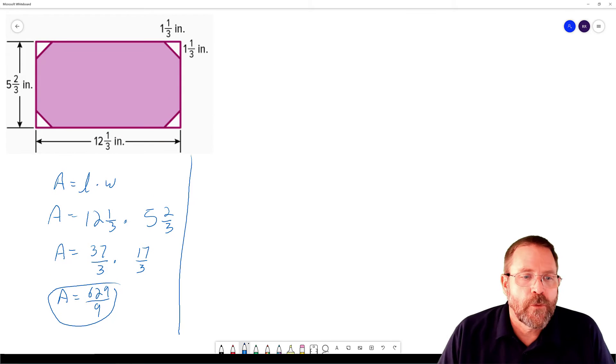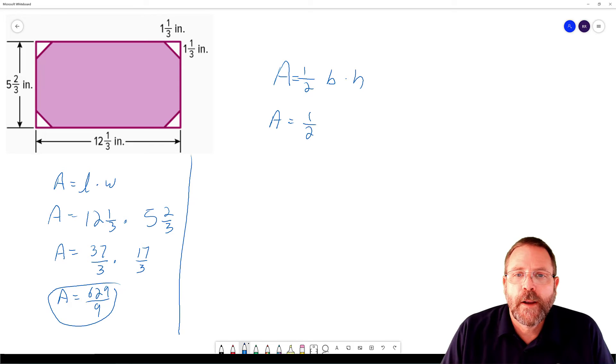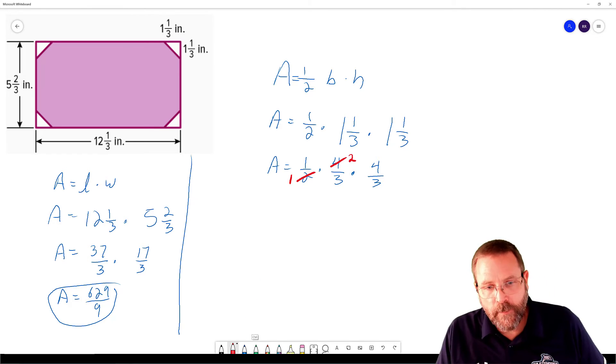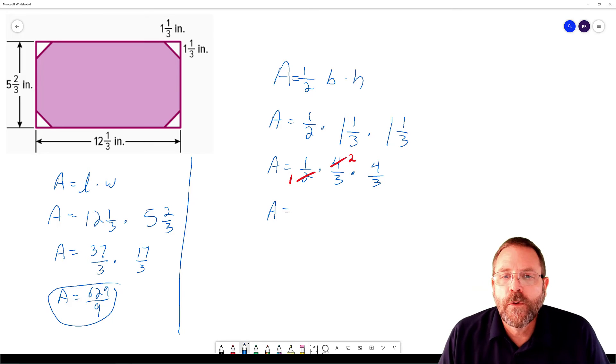The formula for the area of a triangle is 1/2 times base times height. So I have area equals 1/2 times the base which was 1 and 1/3, and the height was 1 and 1/3. Area equals now, 1/2, we're going to do the Texas thing again: 3 times 1 is 3 plus 1 is 4 over 3 times 4 over 3 again. I'm going to simplify before I multiply. 2 goes into 2 once, 2 goes into 4 two times. And now we're going to multiply it out. Area equals 1 times 2 is 2, 2 times 4 is 8, 1 times 3 is 3, 3 times 3 is 9. So the area is going to be 8/9ths.